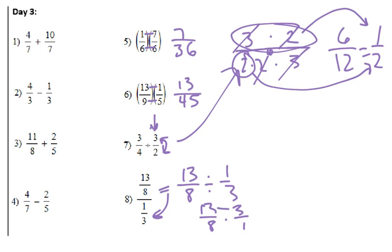Can't do it on number 8 once we flip it, so we get 13 times 3, which is 39, and 8 times 1 is 8, and we can just leave it like that, because I don't think we can reduce that one.